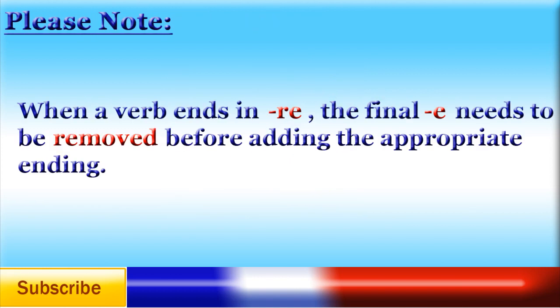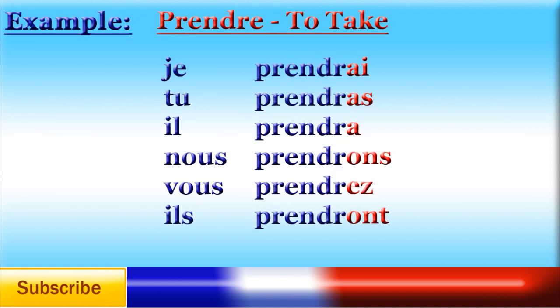Please note: when a verb ends in -re, the final e needs to be removed before adding the appropriate ending. So for example, the verb prendre — to take — in the future tense is: je prendrai, tu prendras, il prendra, nous prendrons, vous prendrez, ils prendront. As you can see, the final e from the infinitive has been removed before adding the ending.